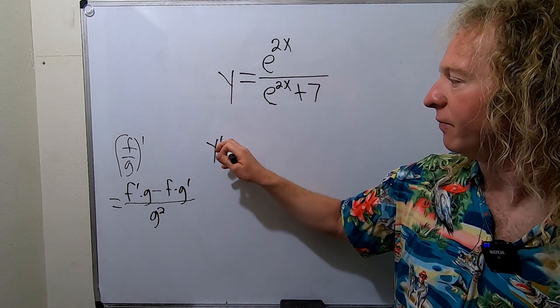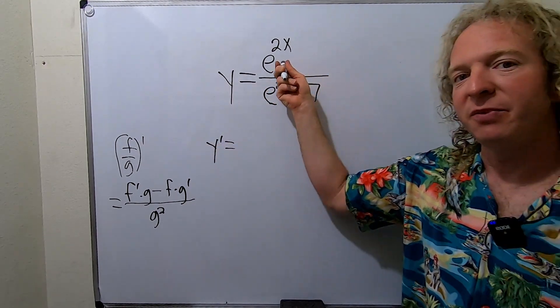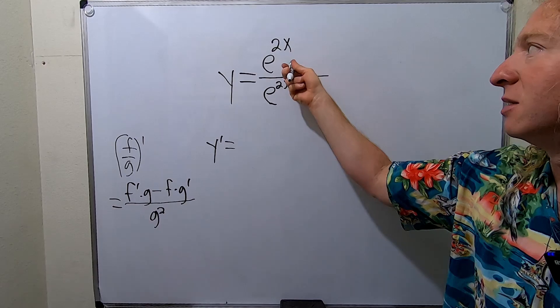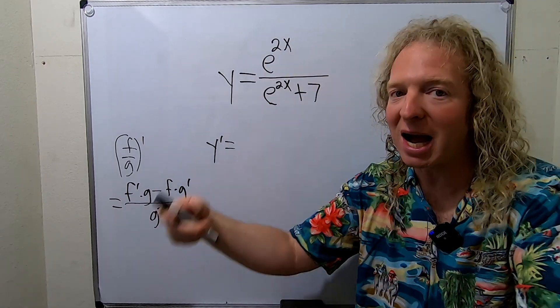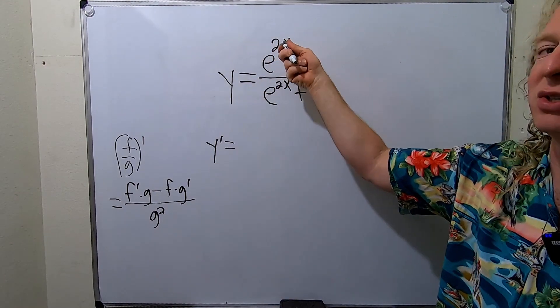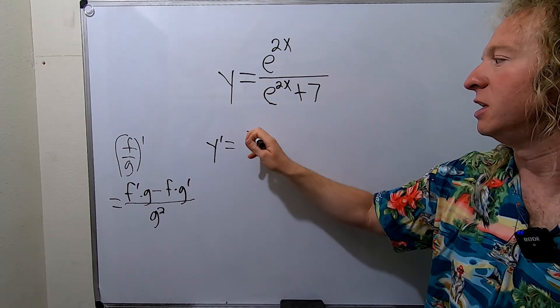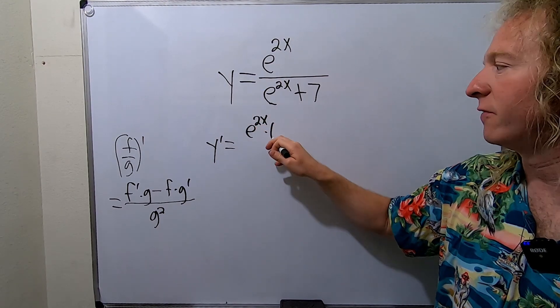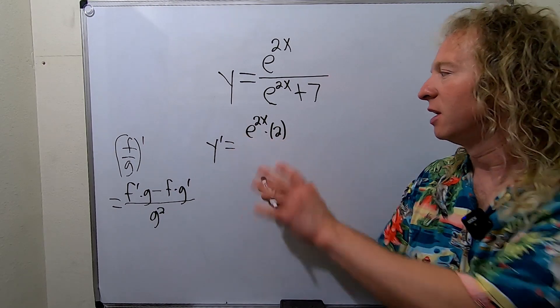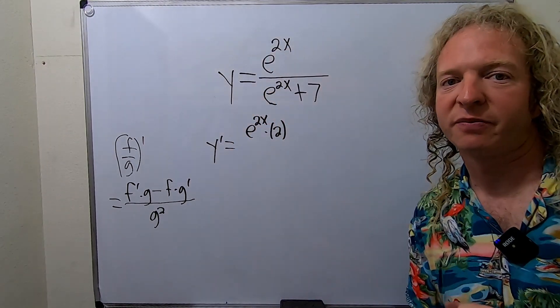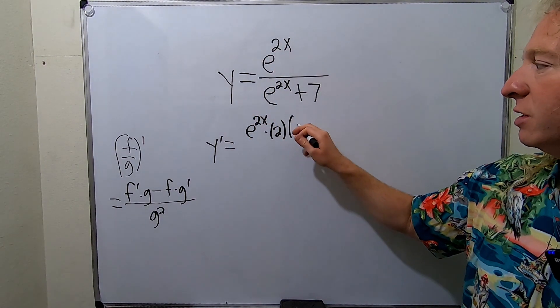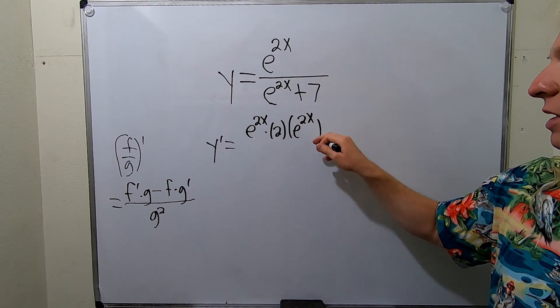So here, let's carefully go through it. So y prime, it's the derivative of the top. So the derivative of e to the 2x is e to the 2x times the derivative of the inside, which is 2. So this is the derivative of the top piece times the bottom piece, e to the 2x plus 7.